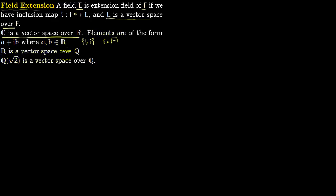R is a vector space over rationals Q. Q(√2) adjoined to rationals is a vector space over rationals. The elements of this are of the form a + √2·b where a and b are rational numbers. Basis here is {1, √2}.